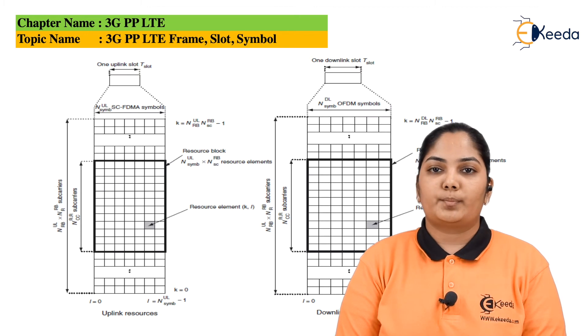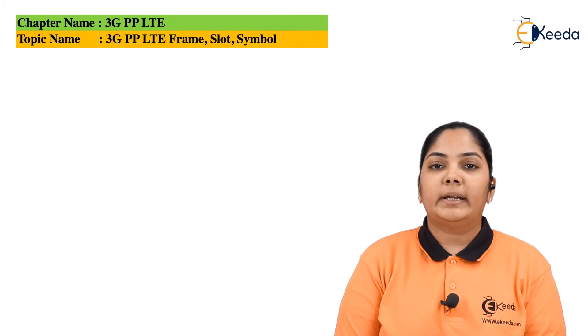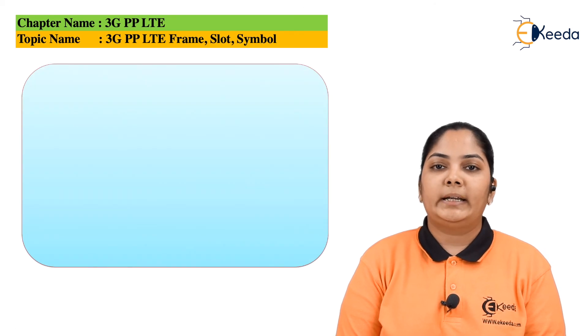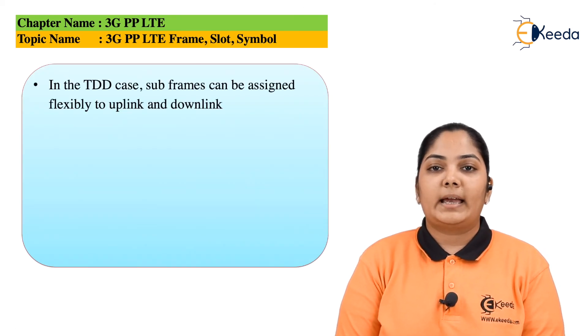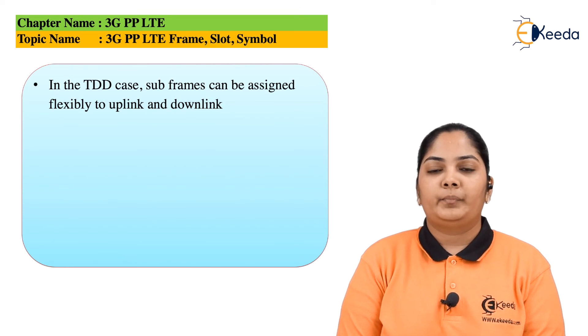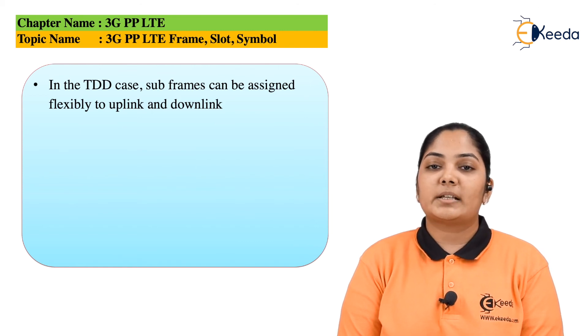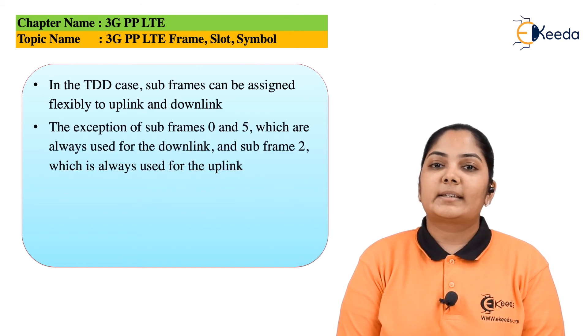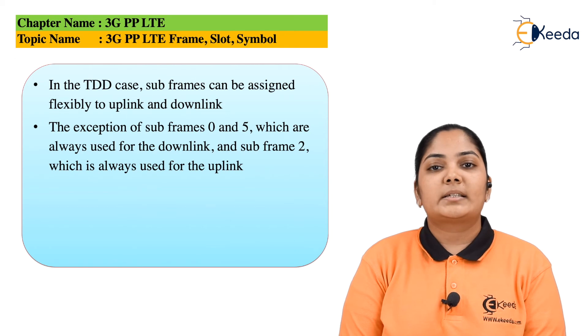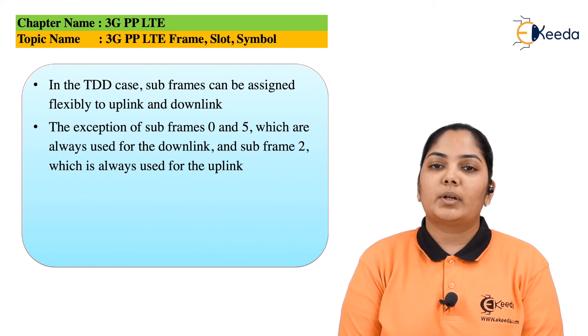Now let us see how the data has been transmitted using TDD. As we know, LTE has got two flavors which are called FDD and TDD. In Time Division Duplexing case, the subframes can be assigned flexibility in uplink as well as in downlink. The exception is subframes 0 and 5 which are used for downlink, and subframe 2 is always used for uplink.